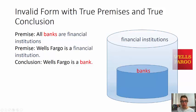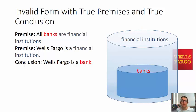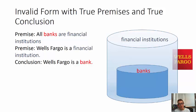The problem is: it doesn't say whether Wells Fargo goes inside the bank-bucket or just in the larger financial-institutions bucket. You have not illustrated the conclusion by drawing the premises. People are left wondering: is it a financial institution that's also a bank, or a financial institution that's not a bank? If we use a less familiar word like 'Barclays' — Barclays is a financial institution, therefore Barclays is a bank — you're left genuinely wondering. That's why this argument is invalid.